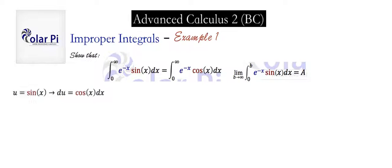I have many videos on integration by parts, but the formula is that the integral of u dv equals u times v minus the integral of v times du. We have to look at this integrand as being in the form u dv, which means we have to pick out a u and a dv. Our u is going to be sine x, and our dv will be e to the minus x dx. So du is cos x dx and v is negative e to the minus x.